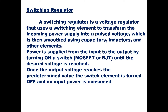A switching regulator is a voltage regulator that uses a switching element to transform the incoming power supply into a pulsed voltage, which is then smoothed using capacitors, inductors, and other elements. Power is supplied from the input to the output by turning on a switch — which can be a MOSFET or BJT — until the desired voltage is reached. Once the output voltage reaches the predetermined value, the switch element is turned off and no input power is consumed. The switching element like MOSFET or BJT turns on and off repeatedly, and the on period varies according to what output voltage you want.